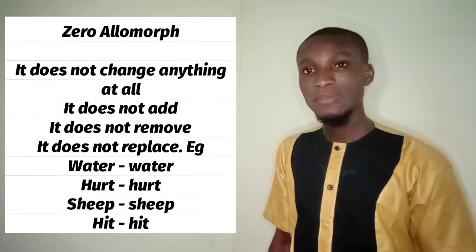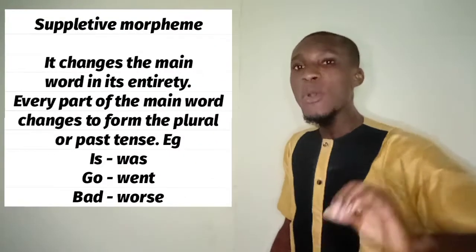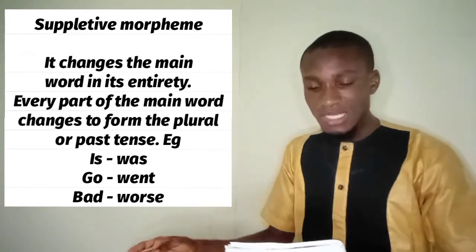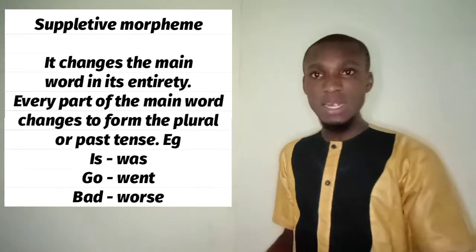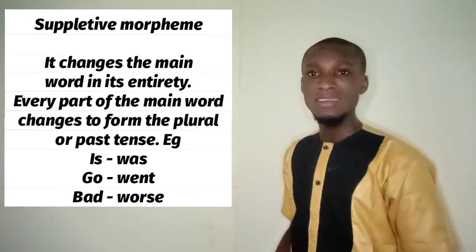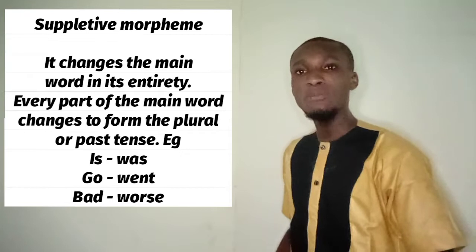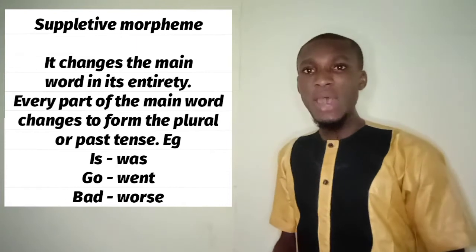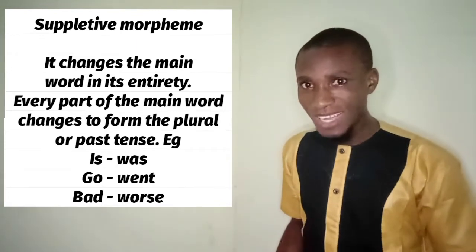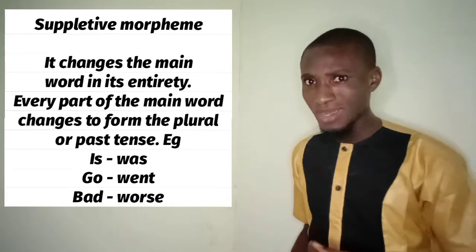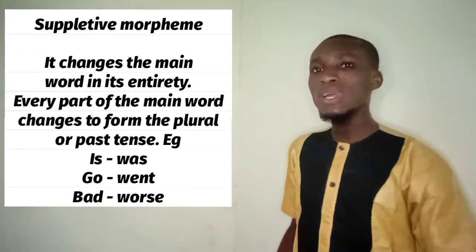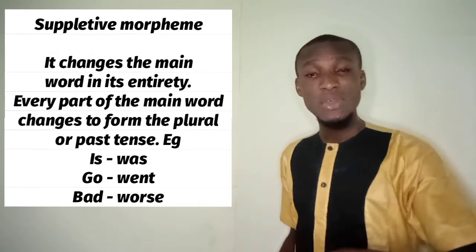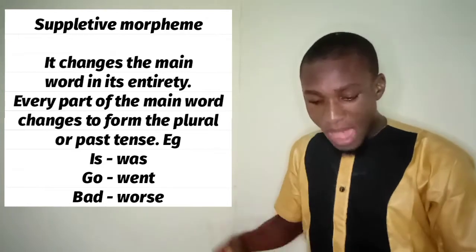But when it comes to suppletive allomorph, it changes the shape of the word in its entirety. The word changes from the way it has been to another form entirely. For example, the past tense of 'go' — you don't say 'goed', you say 'went'. The word has changed in its entirety. That is suppletive allomorph.